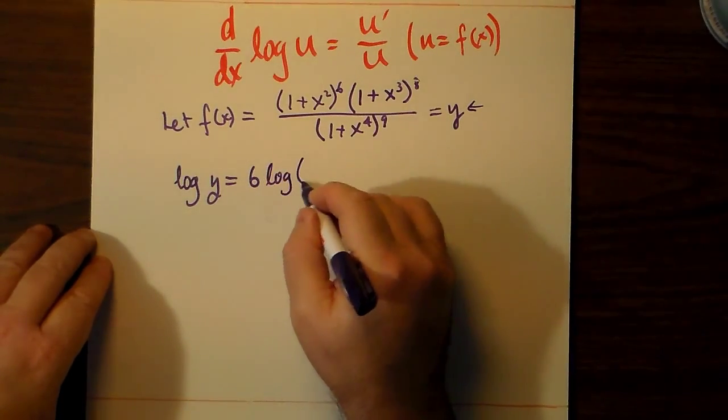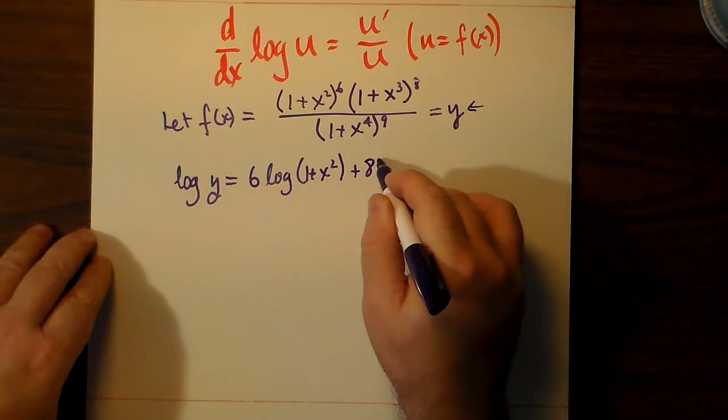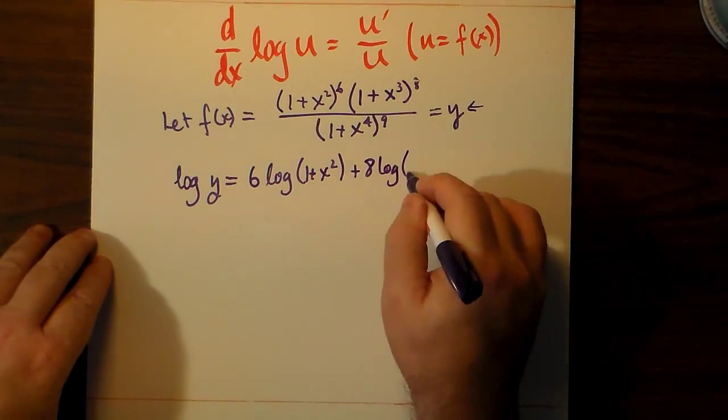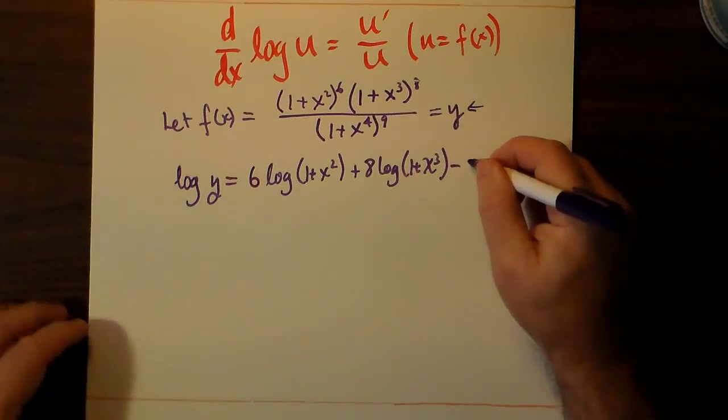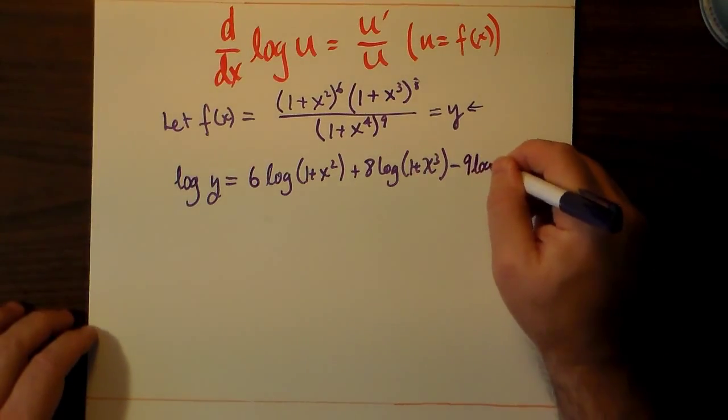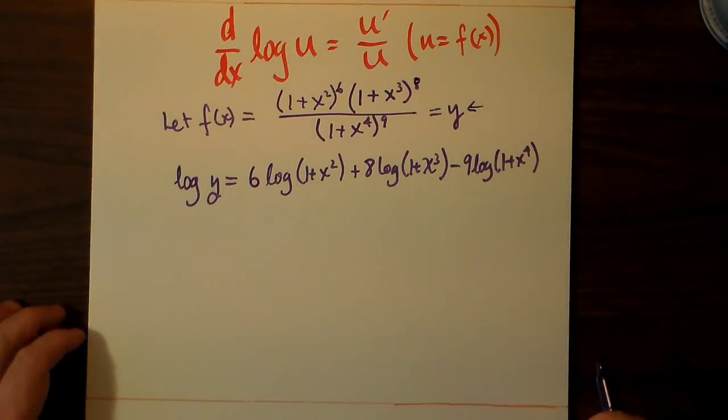Well, then when we take the log of both sides, we find that we turn this very cumbersome rational function into a logarithmic function, which can be just added and subtracted terms.